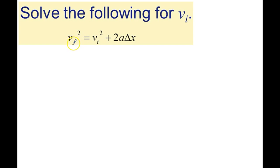And the v sub f means the final velocity squared equals the initial velocity squared plus 2 times the acceleration. And this delta is going to mean change in position, and change in position is displacement.